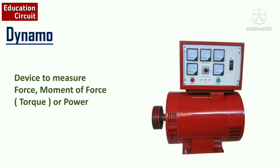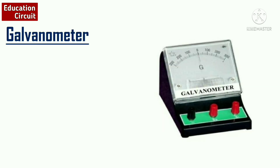Next is the dynamo. A dynamo is used to measure force, movement of force, or power — it measures torque and physical quantities. And the galvanometer is used to measure very minute current flowing in electric circuits or wires. The ammeter measures current in milliampere or more, but the galvanometer is used to measure very minute current.